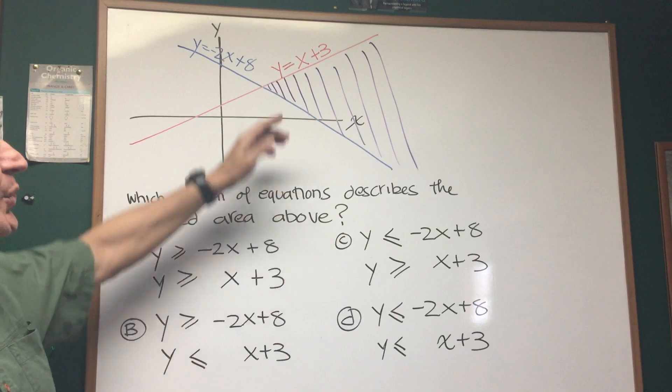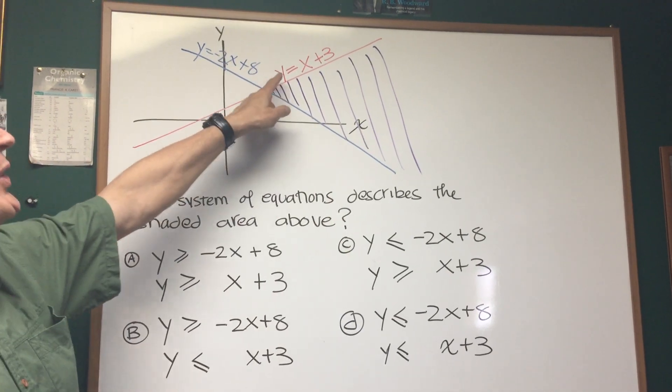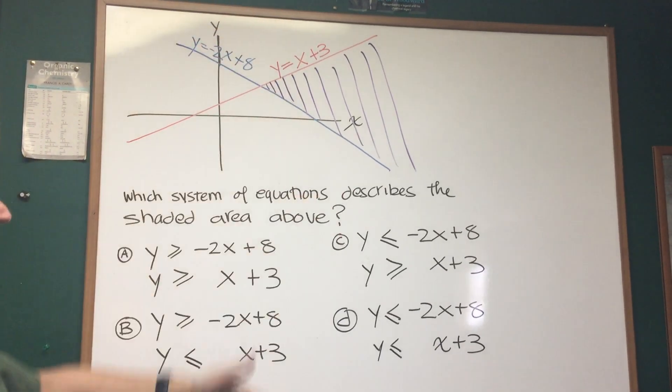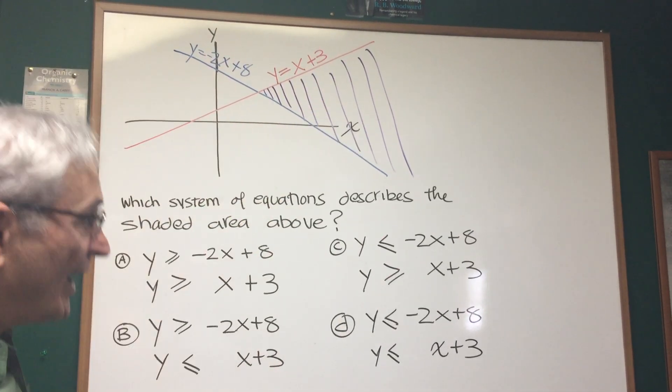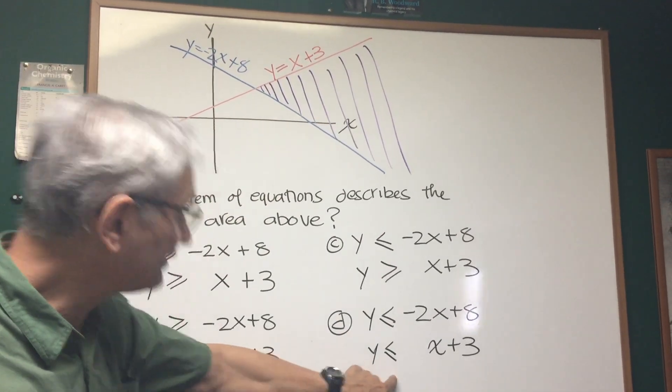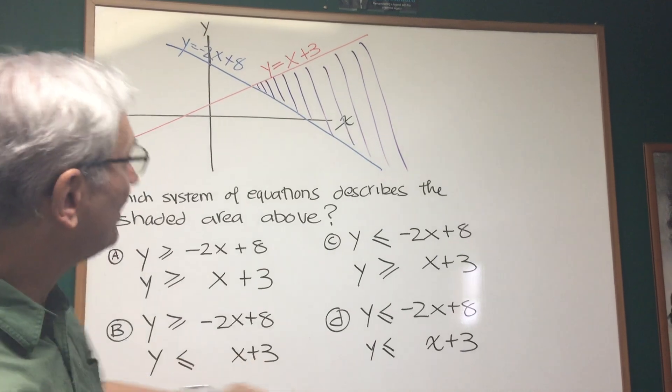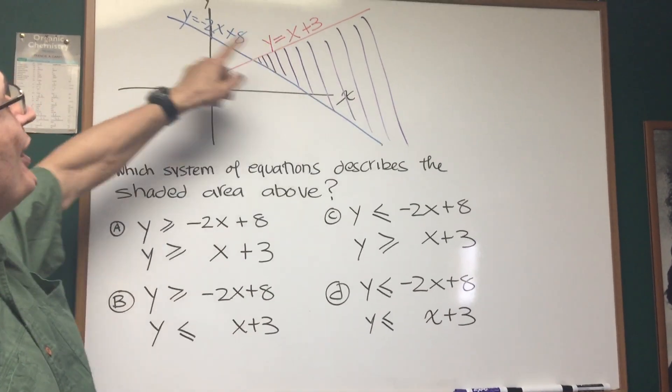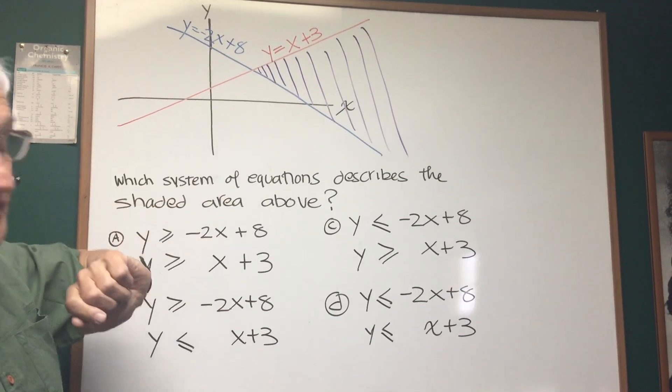So that means we want a system of equations where we have y is less than x plus 3, that is the area below x plus 3, like this, and here and here, but above the line of negative 2x plus 8.